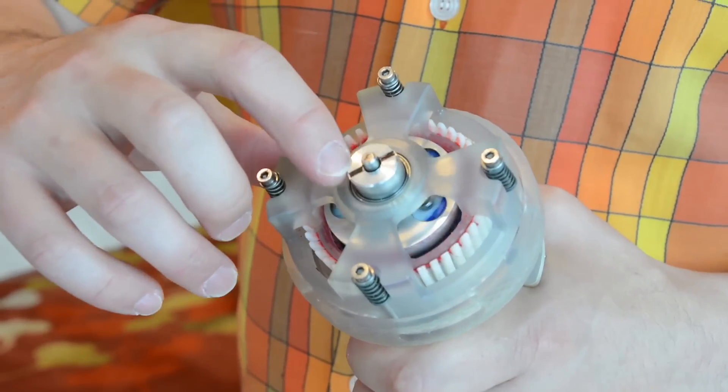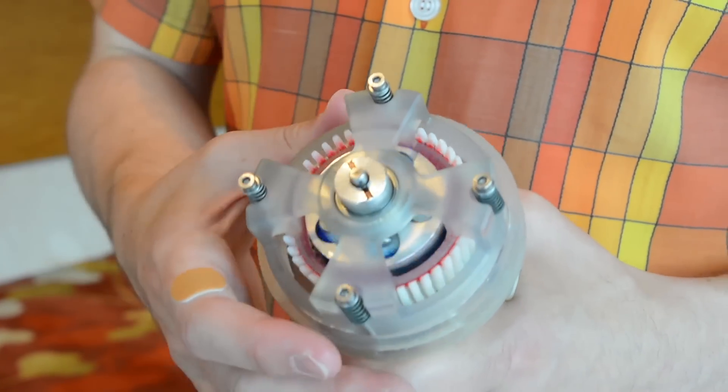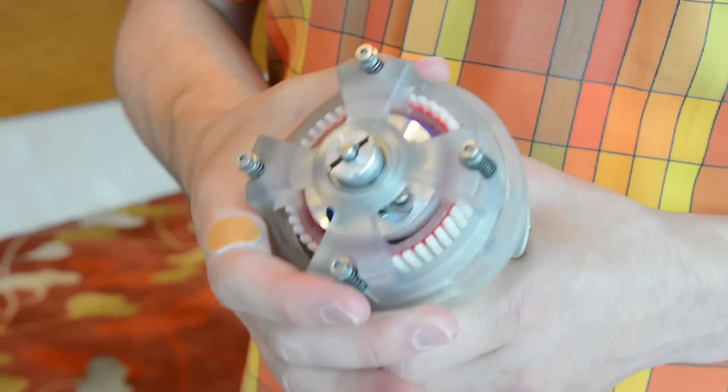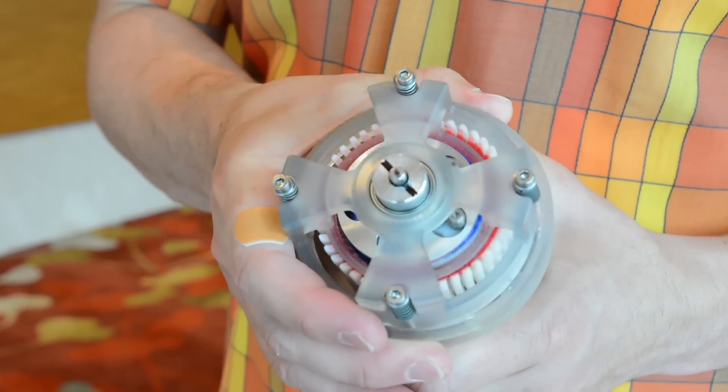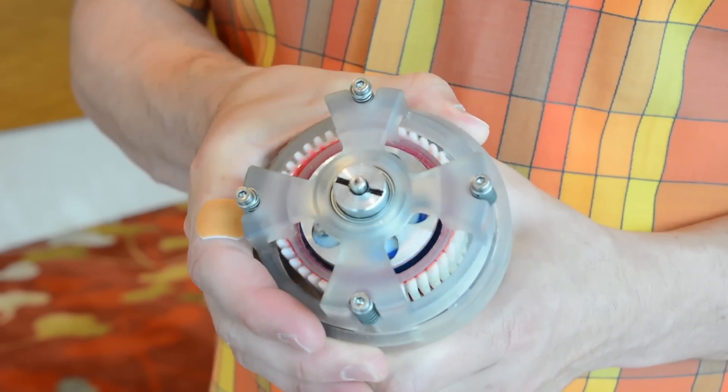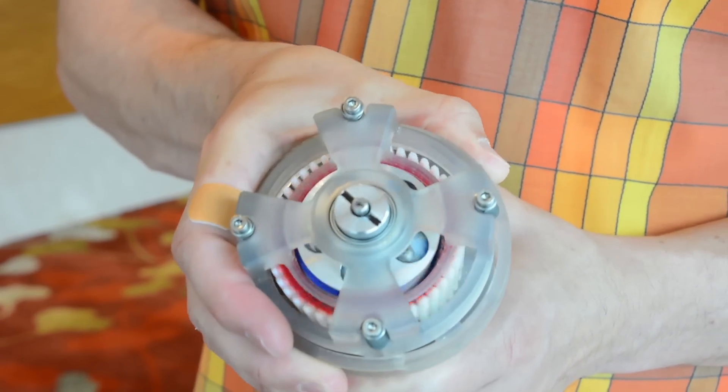We have the input shaft here and the output shaft there. As I rotate this collar on the outside, I can shift the gear ratio. The input velocity is staying the same, but the output just slowed down. If I keep on twisting, it will slow down more and then eventually actually do a full reversal.